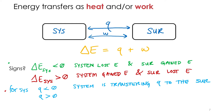What does it mean if Q is positive — if heat is positive? For the system, the system would be gaining heat. The surroundings would be losing heat. The heat would be transferring from the surroundings to the system, so the system is absorbing energy and the surroundings are transferring heat.